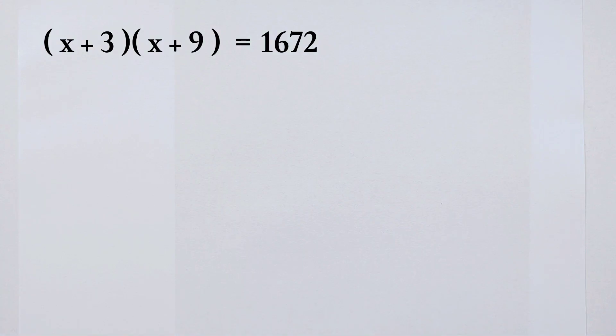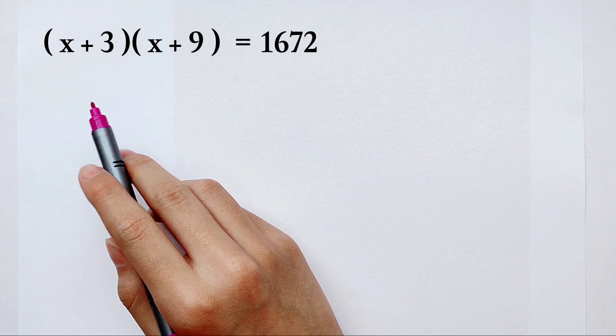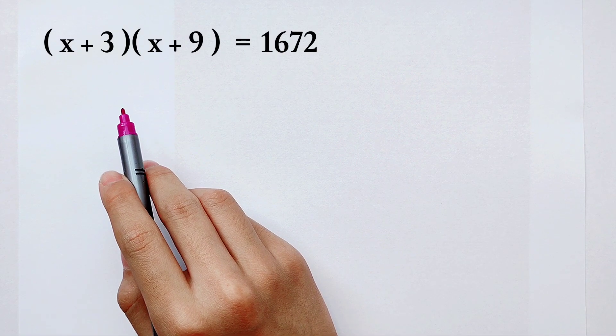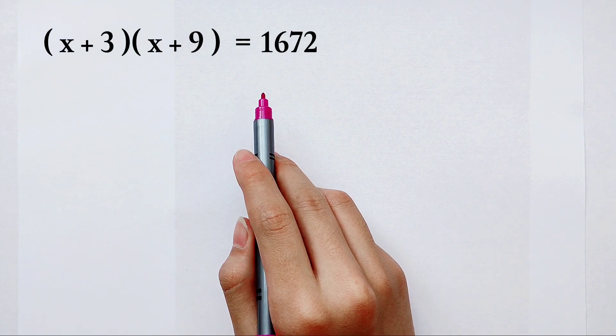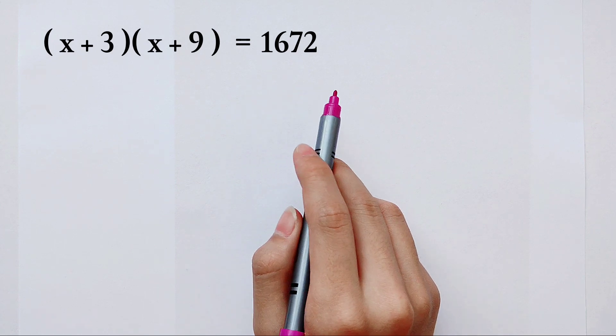How can we solve the value of x just from this equation? What's on the left side? It's the multiplication of two terms of x. What's on the right side? It's a very large number, 1672.